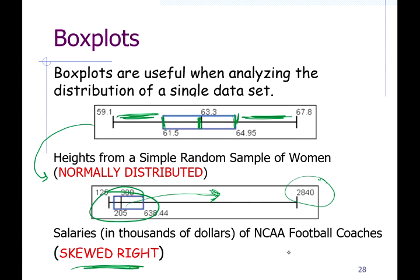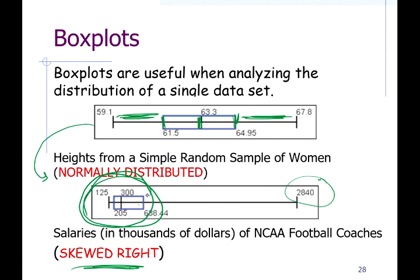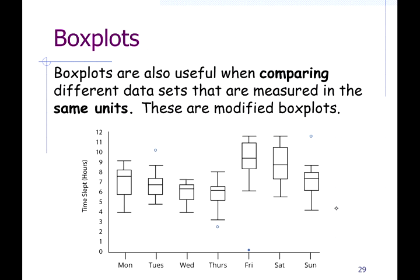For example, NCAA football coaches' salaries — in thousands of dollars — show a skewed right distribution. The maximum salary is about $2.8 million and the lowest is $125,000, but most coaches are clustered at the lower end with some outliers at the high end. Since box plots are one-dimensional, you can put several together to compare distributions — for example, hours of sleep each day of the week for college students.